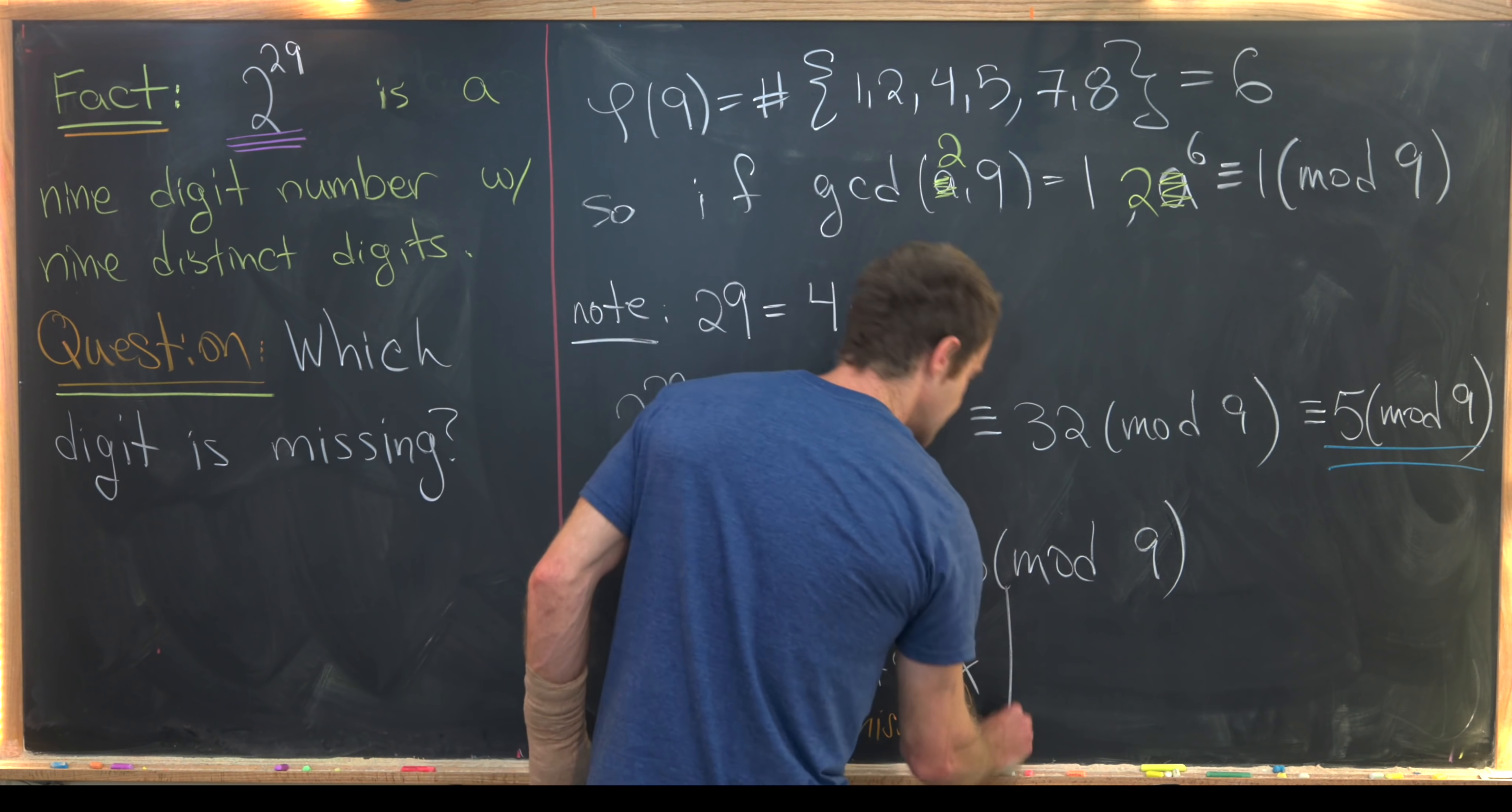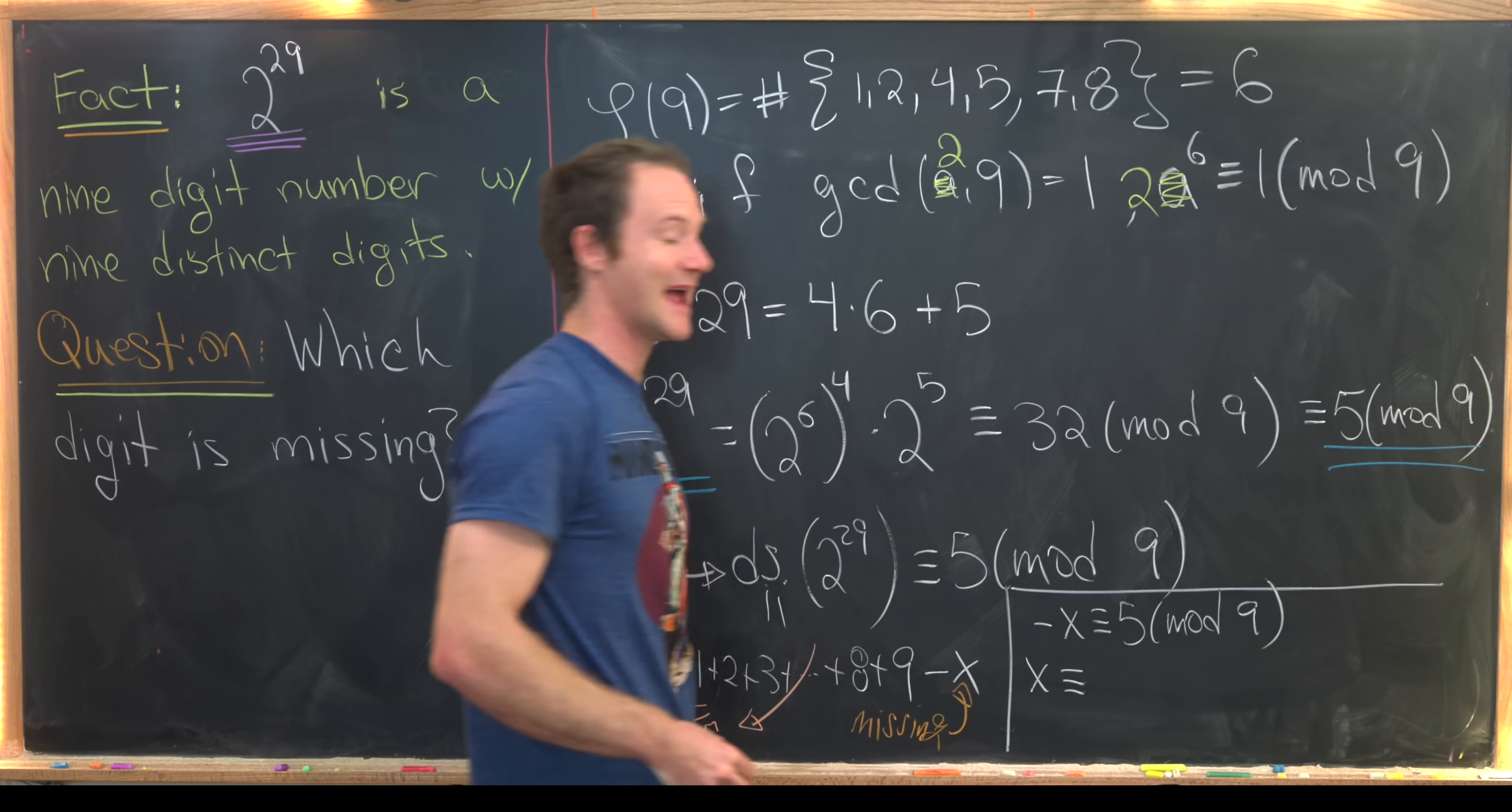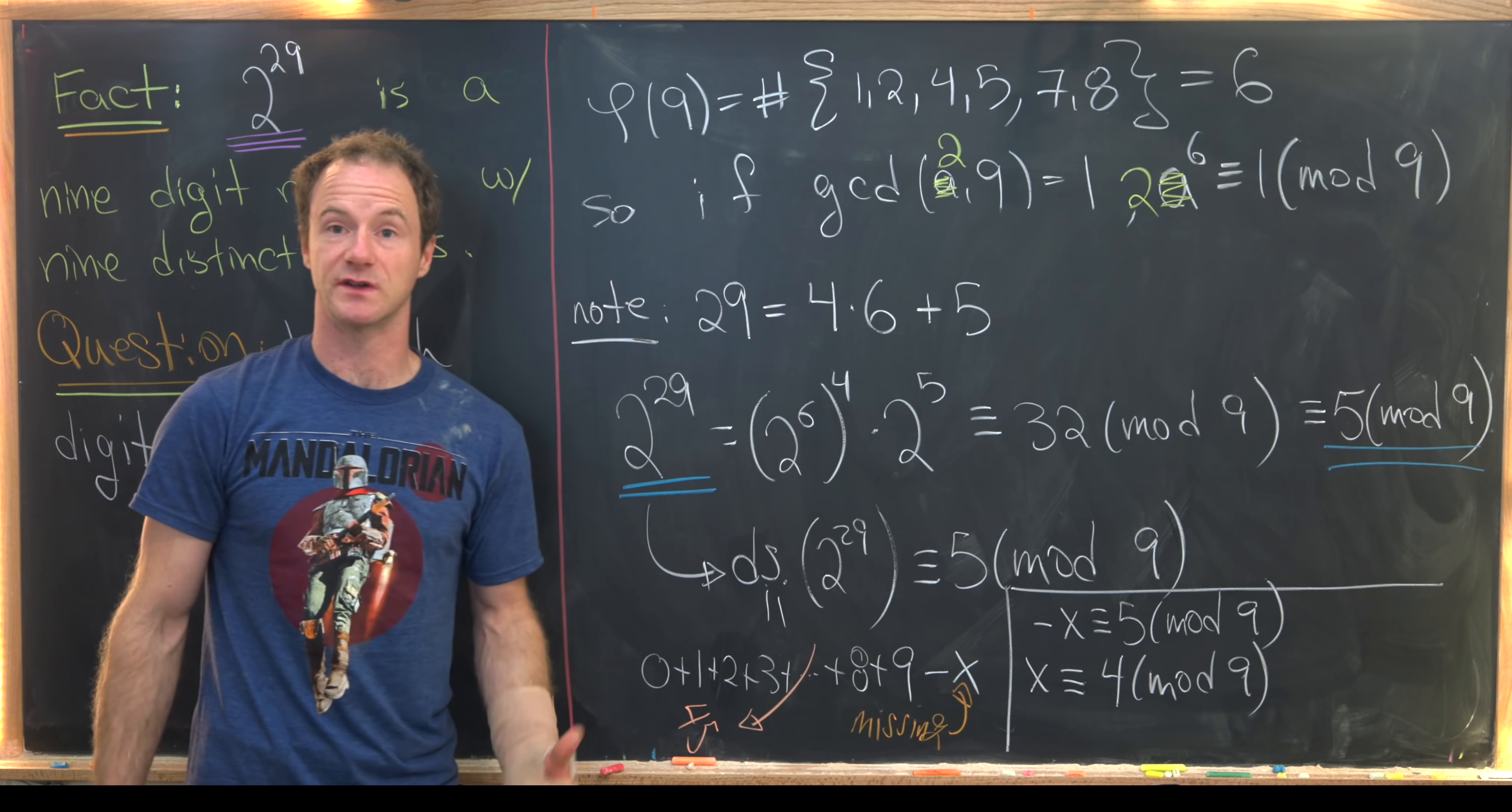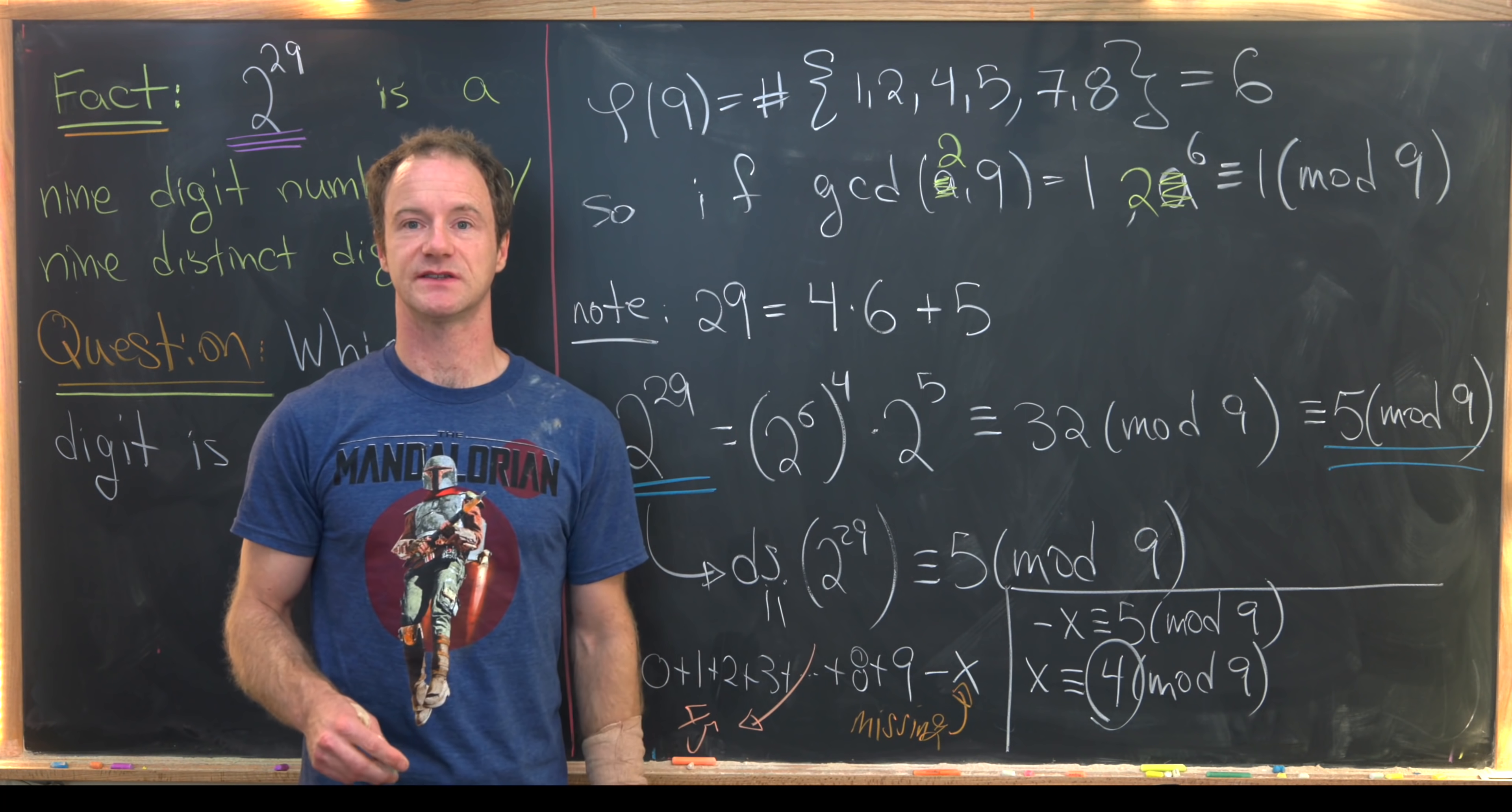So in the end we have negative x is congruent to five mod nine. In other words, x is congruent to negative five mod nine. But negative five mod nine is the same thing as four modulo nine. That's because five plus four is nine, which is zero. But that gives us our missing digit is four, which is exactly the question we wanted to answer. And that's a good place to stop.